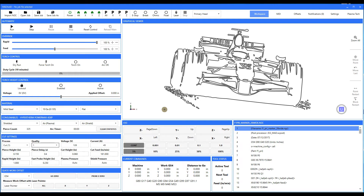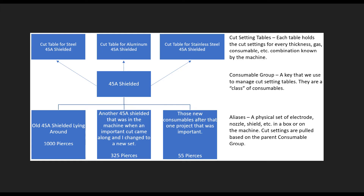Now let's take a look at a scenario where you have a set of 45-amp shielded consumables on your torch and you have been cutting away on mild steel — remember that one had 325 pierces on it. Now you decide you want to cut some aluminum, which also uses 45-amp shielded — the exact same consumables — but you really don't want to use the one with 325 pierces. You want to put a brand new set in. The issue is that the older set with 325 pierces is still cutting like a champ on the mild steel, and you don't really want to throw it away.